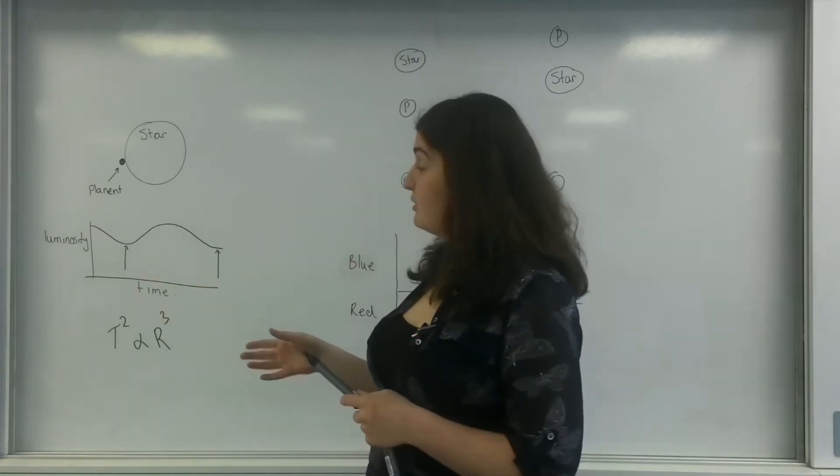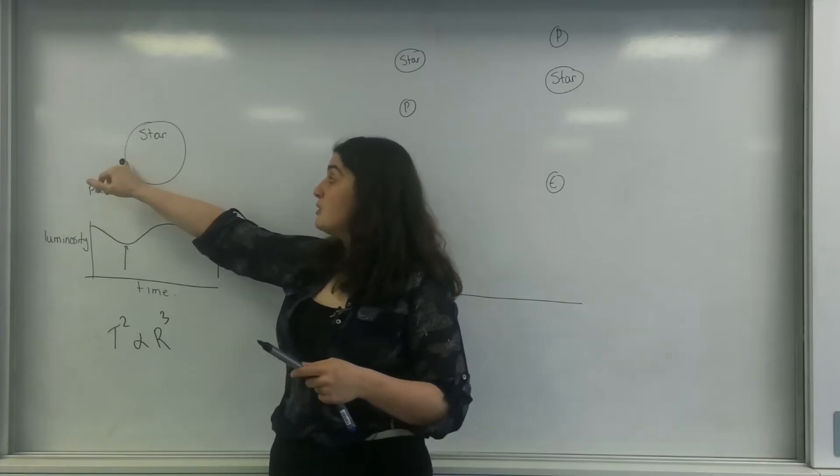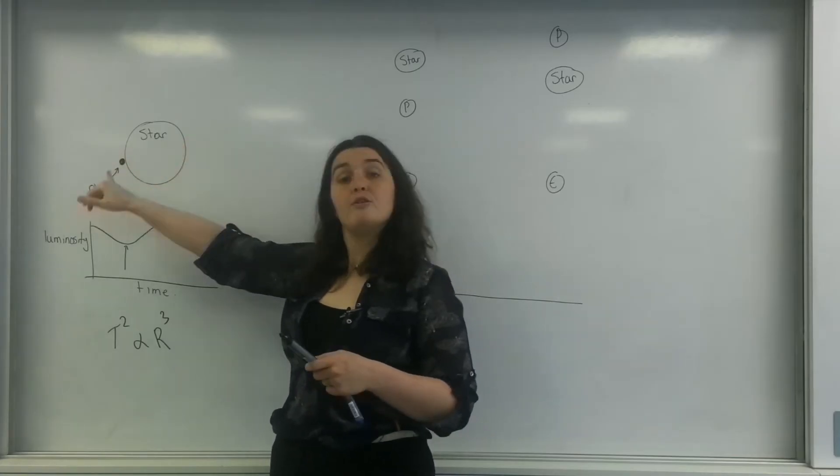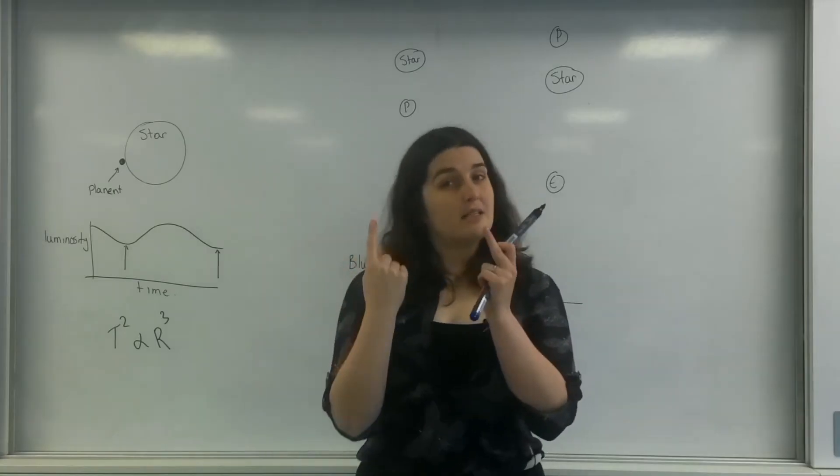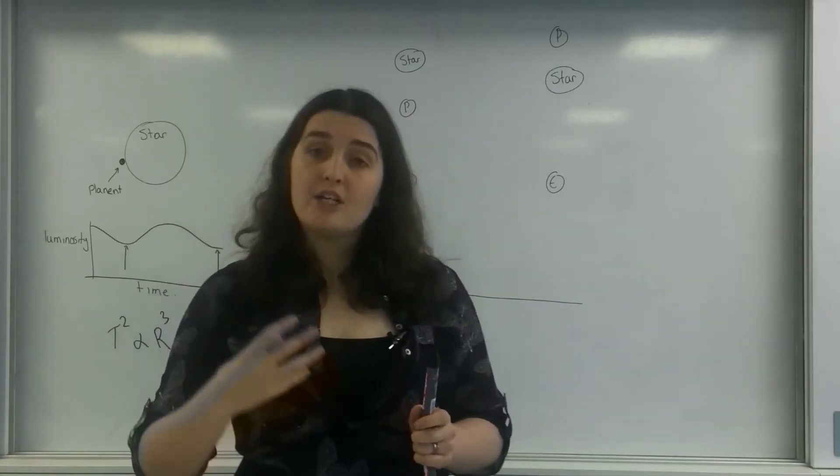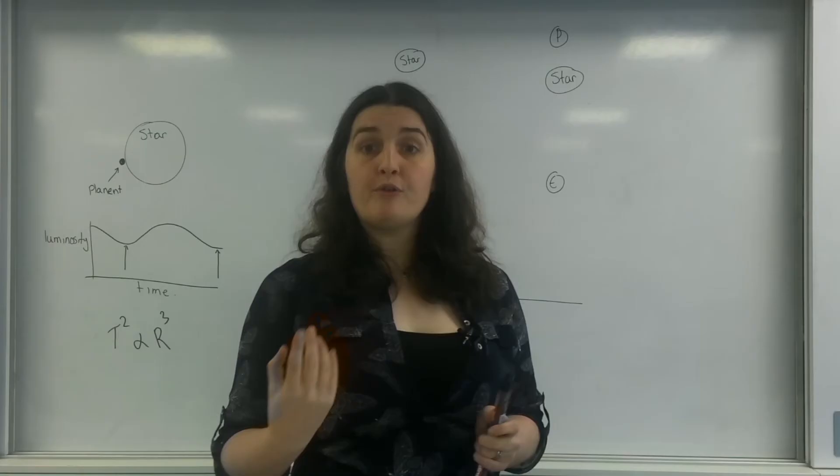So that is one method, and this is known as the luminosity method. So as a planet goes across a star, the luminosity will dip slightly and we're able to measure that slight dip to actually work out the time period of that oscillation.